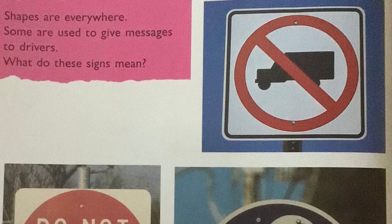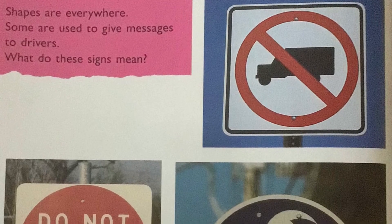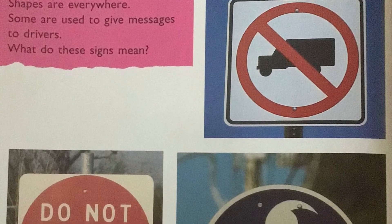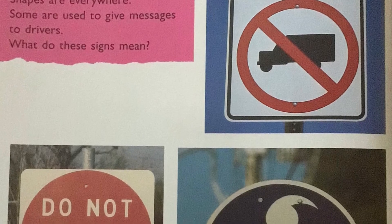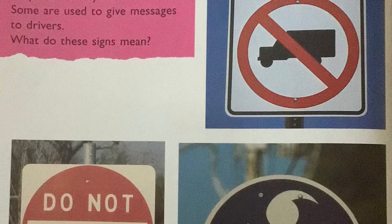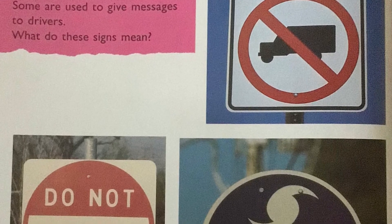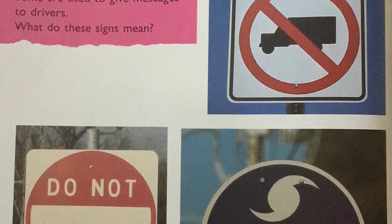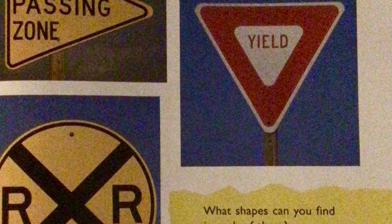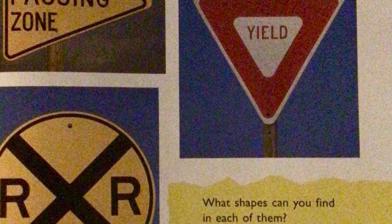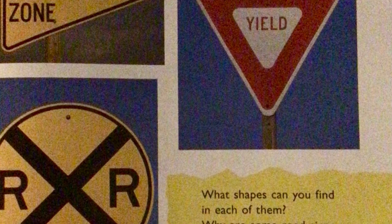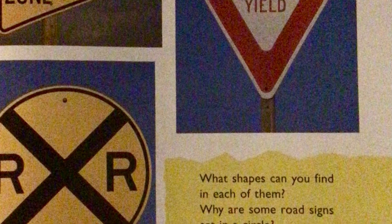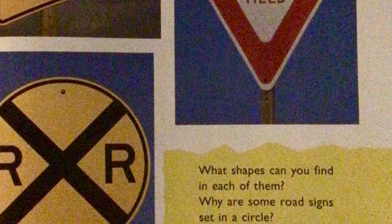Shapes are everywhere. Some are used to give messages to drivers. What do you think these signs mean? What shapes do you see? I see all different shapes — circles, squares, rectangles, and the shape of a truck. So cool! What shapes can you find in each of these? Why are some road signs set in a circle? Why are others in a triangle? I do see circles and triangles.